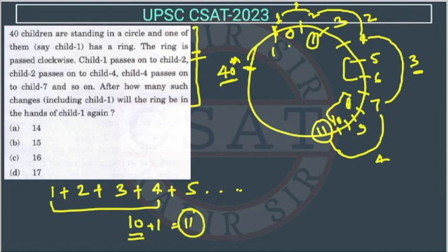So we have to find when this ring will reach this child, the first child again. So they are saying after how many such changes will the ring be in the hand of child 1 again. So we have to find that. So there will be rotations like this.